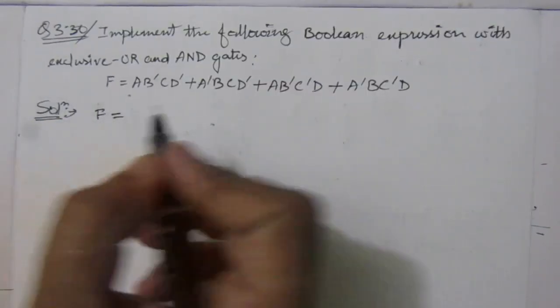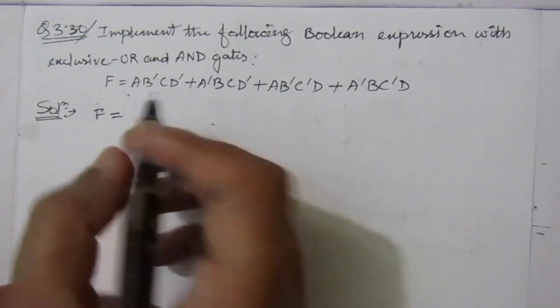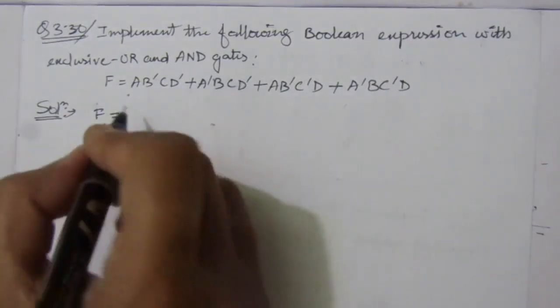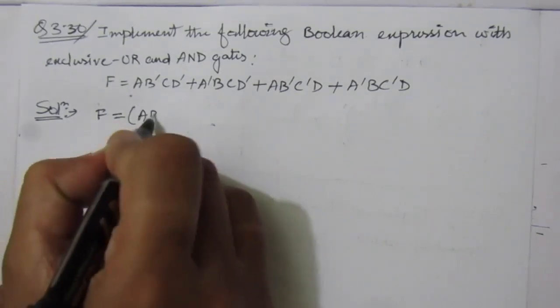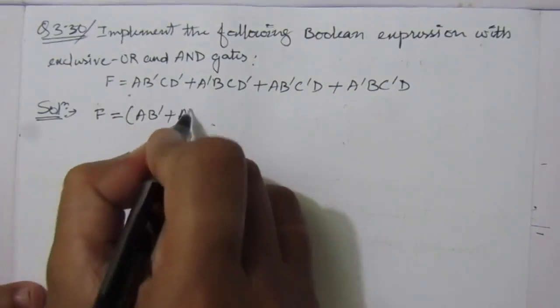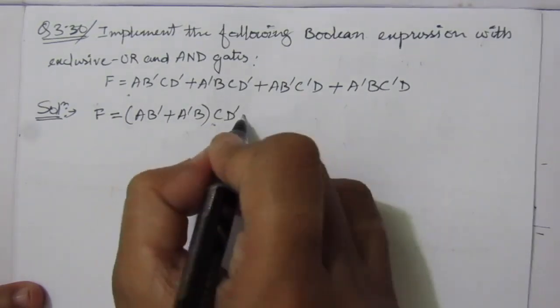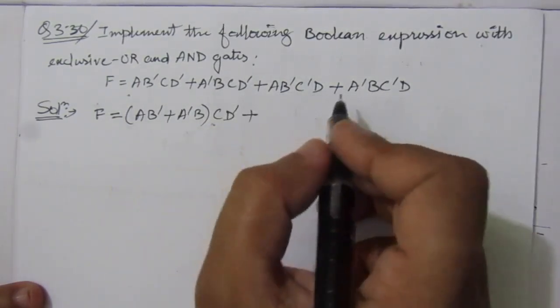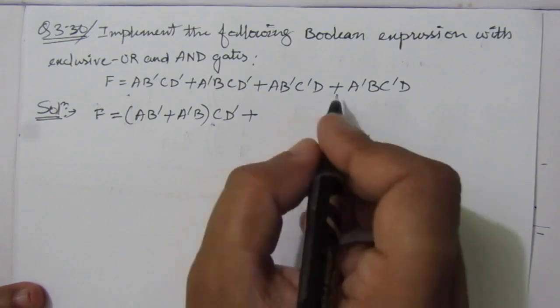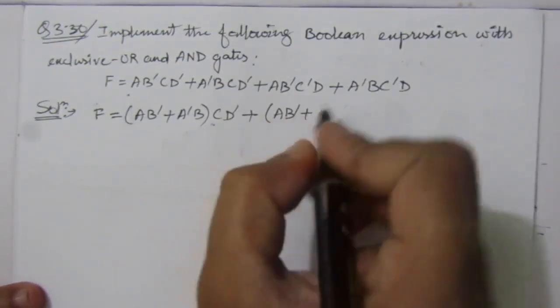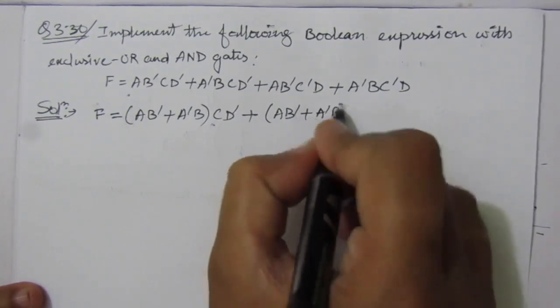Let us simplify it. F equals, from this expression what we can do? From the first two terms, we can take CD bar common. So we will get AB bar plus A bar B all into CD bar. Plus, from this term we can take C bar D common. So we will get AB bar plus A bar B.